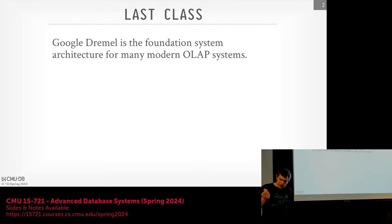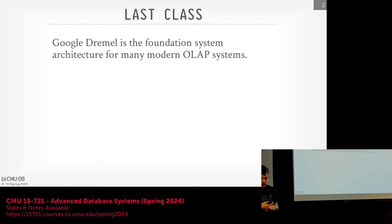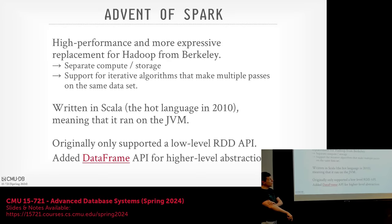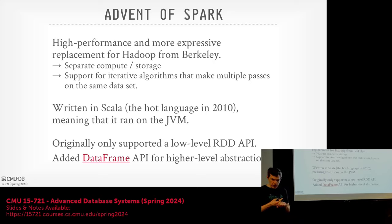To understand the Databricks Photon paper, we want to first talk about the history of how Spark came about and what led them to building the accelerator the way that they did. Flashing back to the late 2000s when MapReduce was taking off, there was a project called Spark at UC Berkeley trying to build a better version of the MapReduce/Hadoop model.